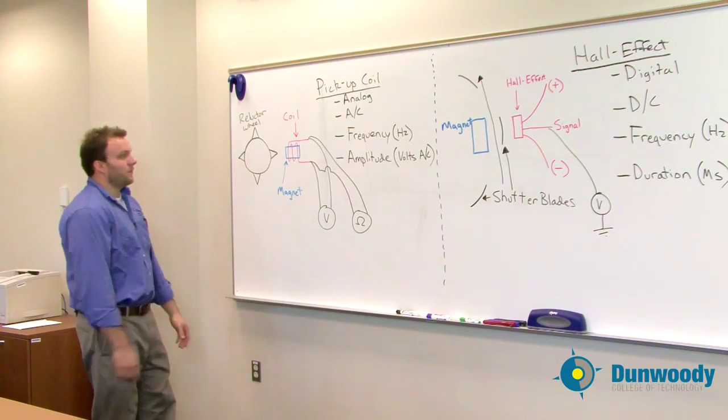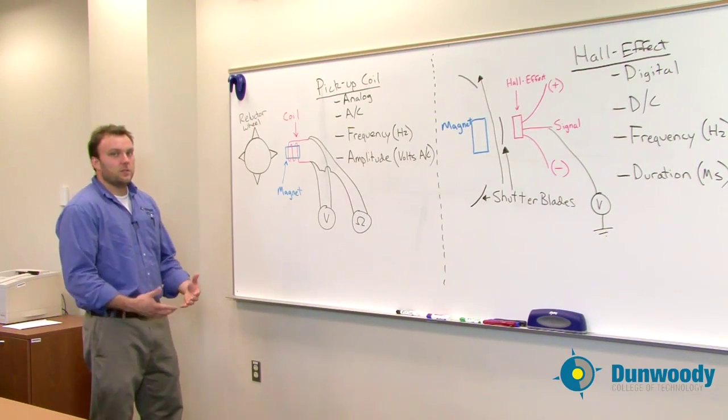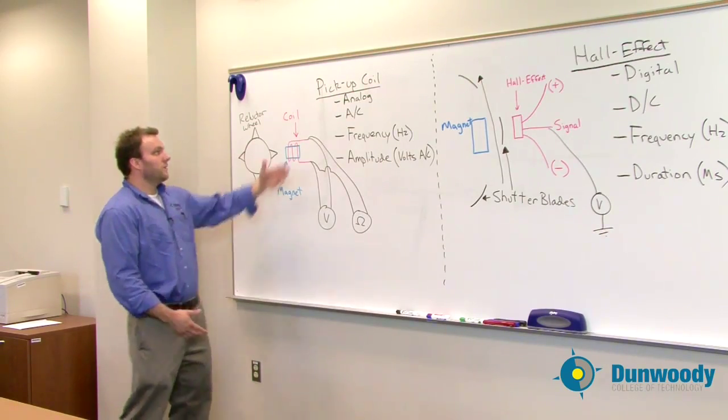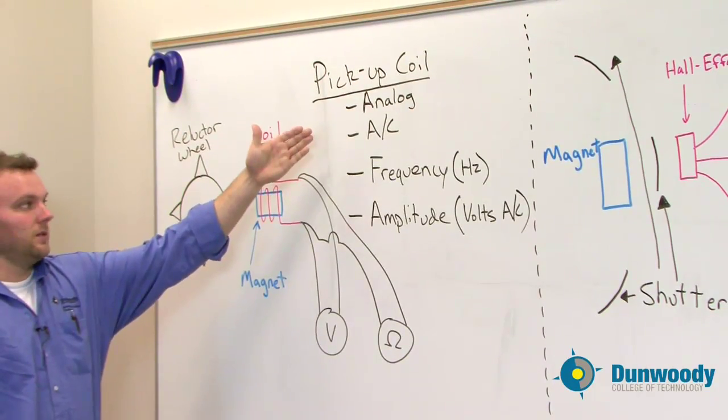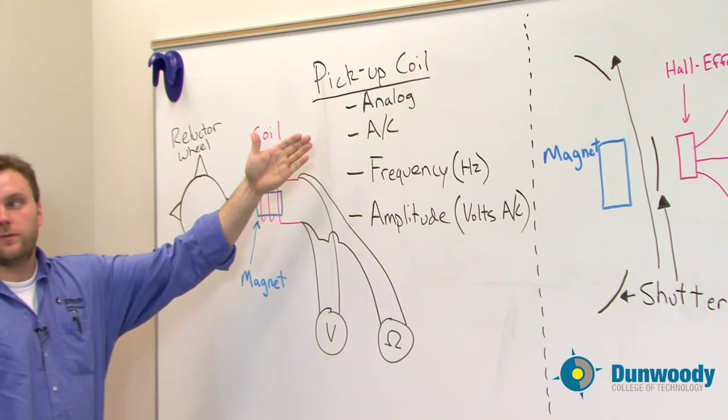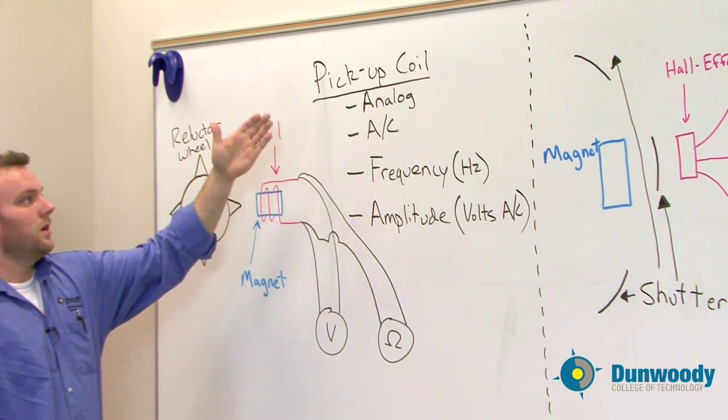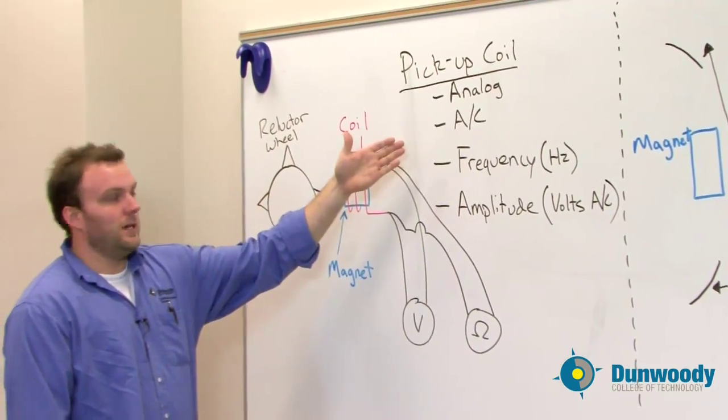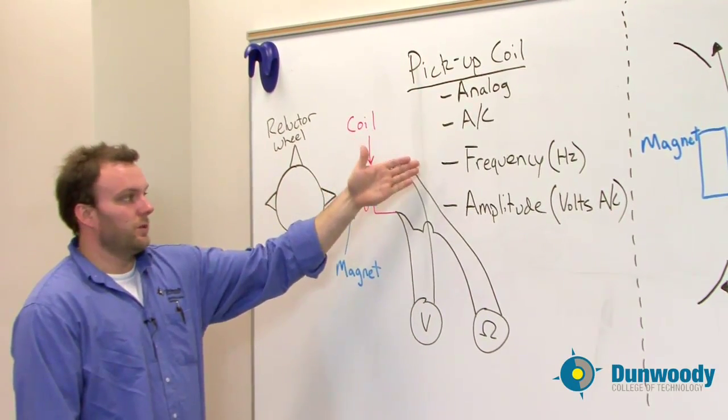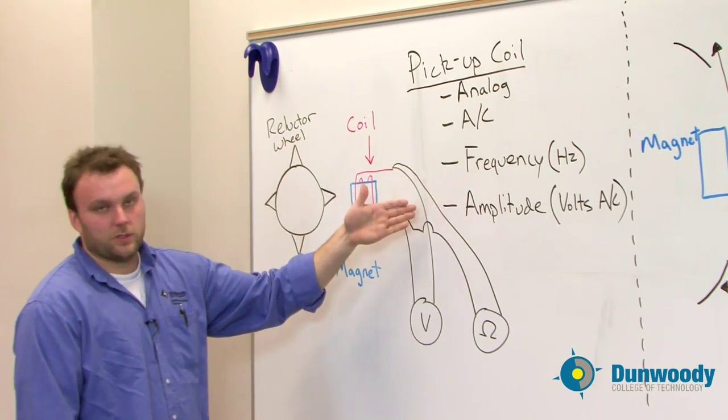The first system we're going to talk about is a pickup coil. There's a couple things you need to understand about pickup coils. The first is that this is an analog signal. If you don't remember analog signals, please refer back to the previous video that talked about digital analog signals. As you remember, analog signals are also an AC voltage. They can be measured with frequency and amplitude.